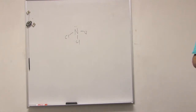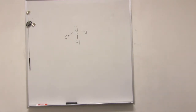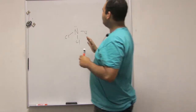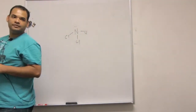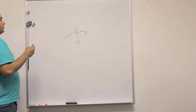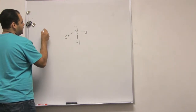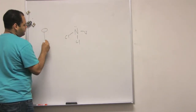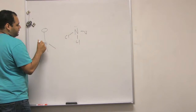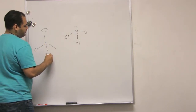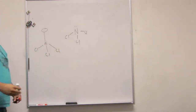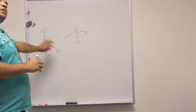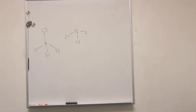So this is one lone pair. I'm trying to remember the shape. Bent has two. Well, what geometry is this? It's trigonal. Now trigonal — remember the lone pair counts as what? Oh, there's four. So this is a tetrahedral with one lone pair.